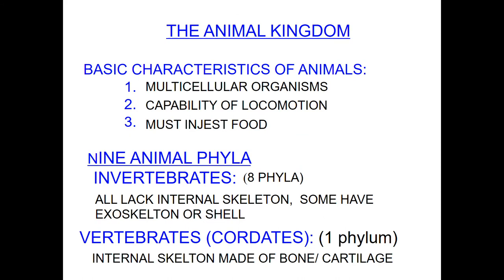The animal kingdom. Basic characteristics of animals: they are multicellular organisms, they are capable of locomotion, and they must ingest food. There are nine animal phyla — remember, King Philip Came Over For Good Spaghetti. Eight of those phyla are invertebrates; they all lack an internal skeleton and some have an exoskeleton or shell. Vertebrates only have one phylum: chordata, or chordates. They have an internal skeleton made of bone or cartilage.